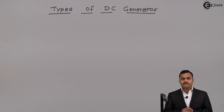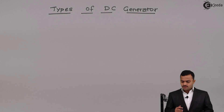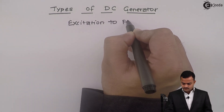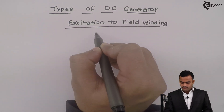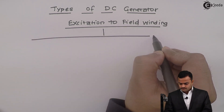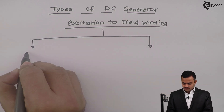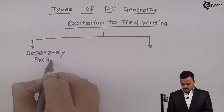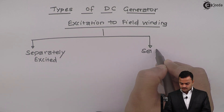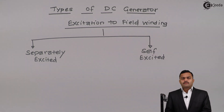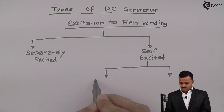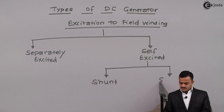Types of DC generator depends on the connection of field winding in a generator and how it is excited. Based on the excitation given to field winding, we have two types of generators: separately excited or self-excited. In self-excited, we have further two types: shunt generator and series generator.